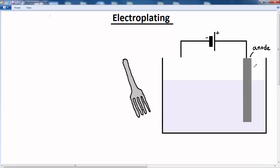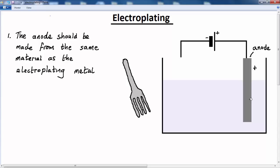Well the first thing I've got to do is make sure that the anode, that's the positive electrode, is made from the material with which I want to electroplate the fork. In this case, copper. Let's make a note of that. So I'm going to electroplate the fork with copper. The anode must be made from copper.